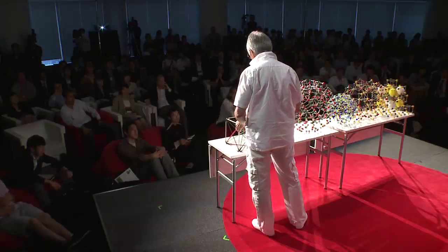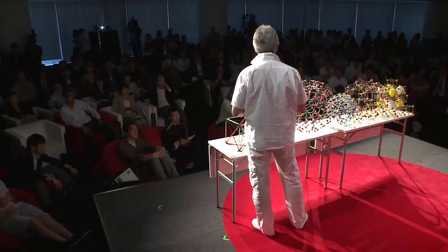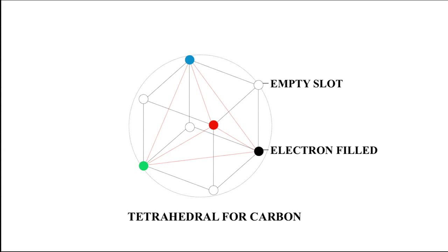Now let me show you how my model applies to atoms and molecules. Let's take carbon, for example. Carbon has four electrons, and its configuration is tetrahedral, simply because it is the simplest, most symmetrically balanced arrangement, with the least repulsion amongst the four electrons.